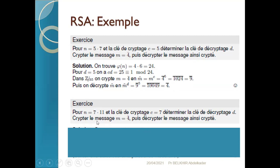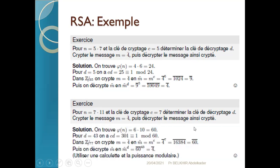De manière similaire, un deuxième exercice : N = 7×11, la clé publique E = 7. Vous calculez phi(N), vous trouvez la clé privée D et vous faites le chiffrement avec le même procédé, ce qui vous permettra de vérifier l'algorithme RSA.